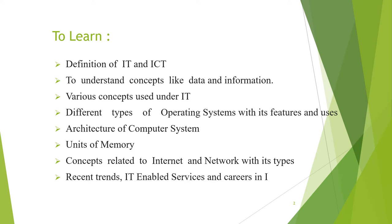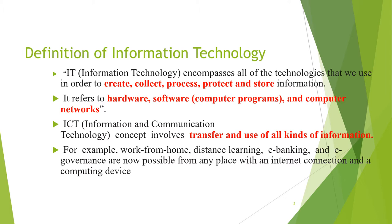Now let's begin with the definition of Information Technology. IT includes five main processes: collect, create, process, protect, and store. These five words are very important. It is a technology which encompasses all the technologies we use in order to perform these processes. In a computer, information is transferred from one PC to another, or one file is transferred to another file.